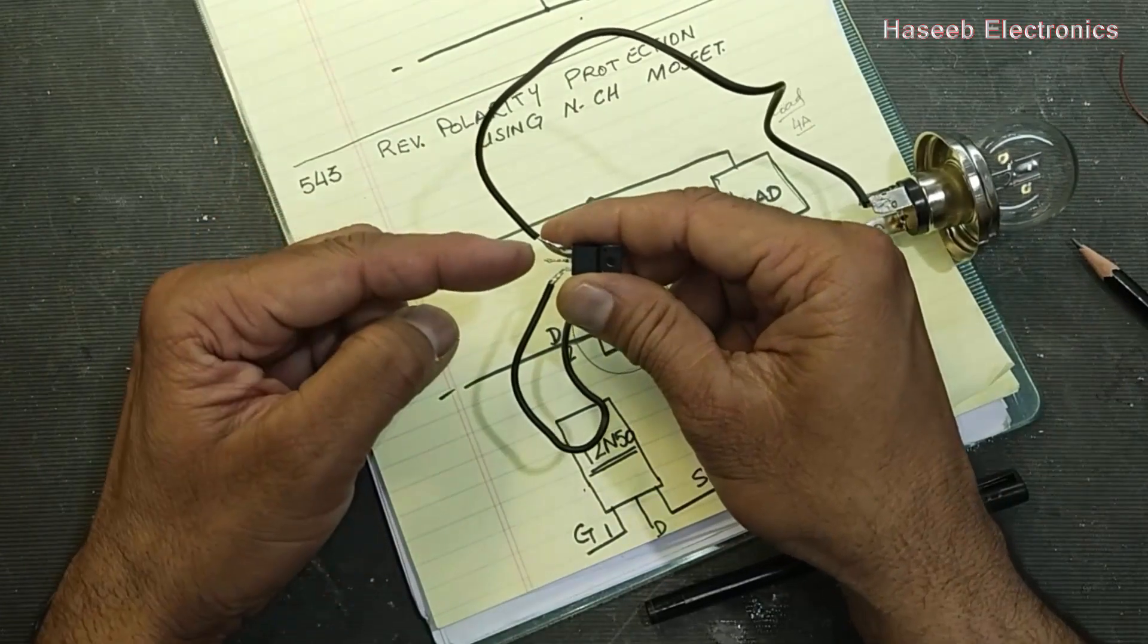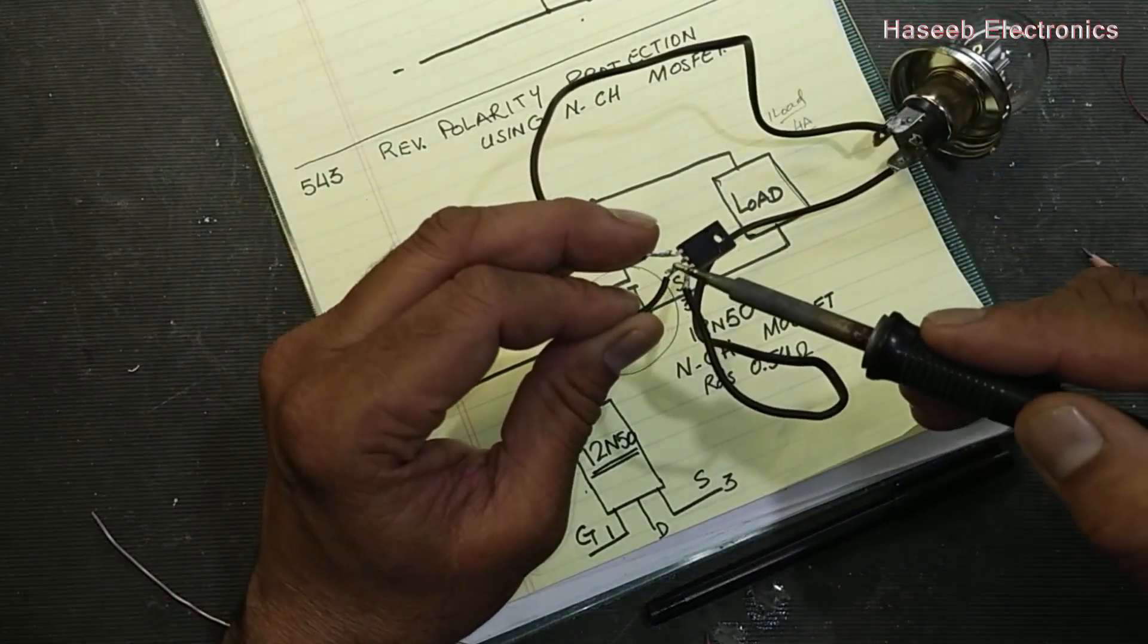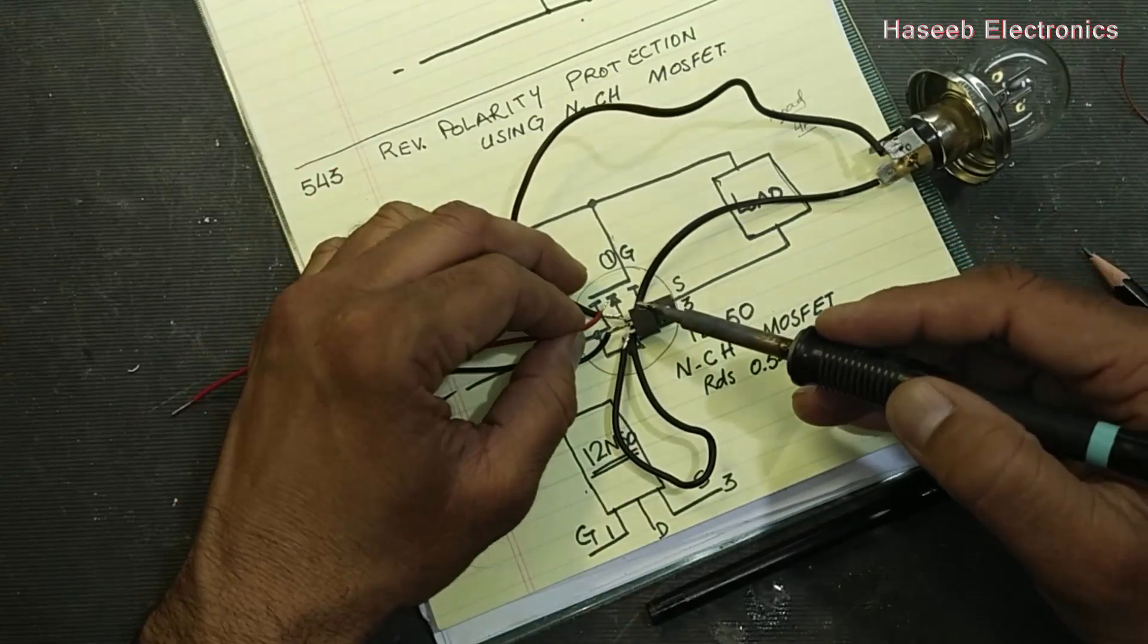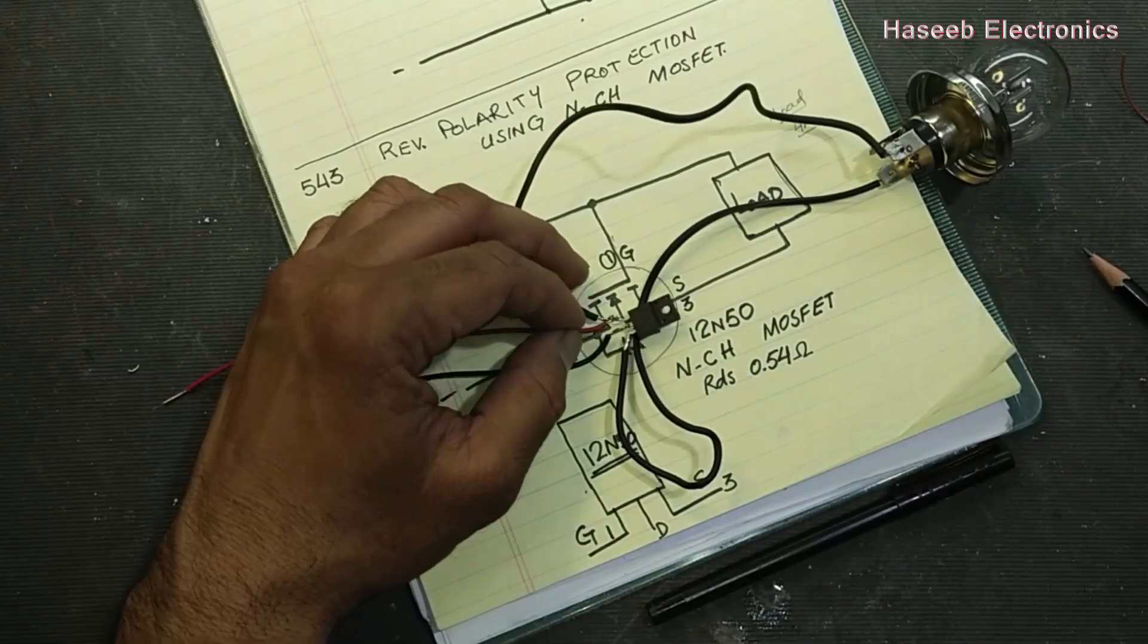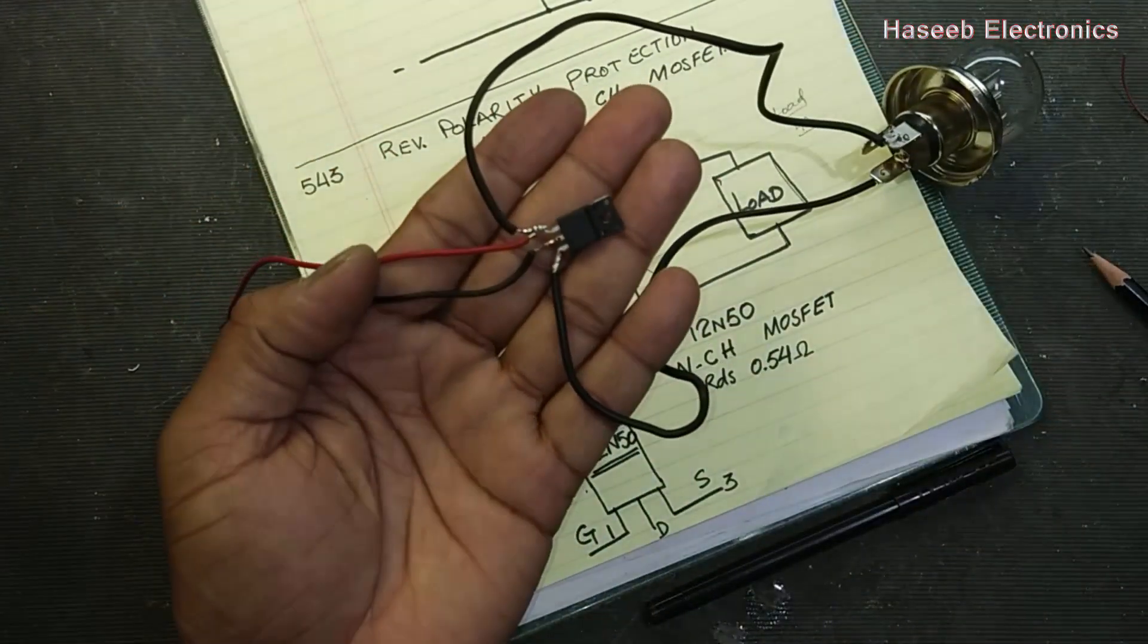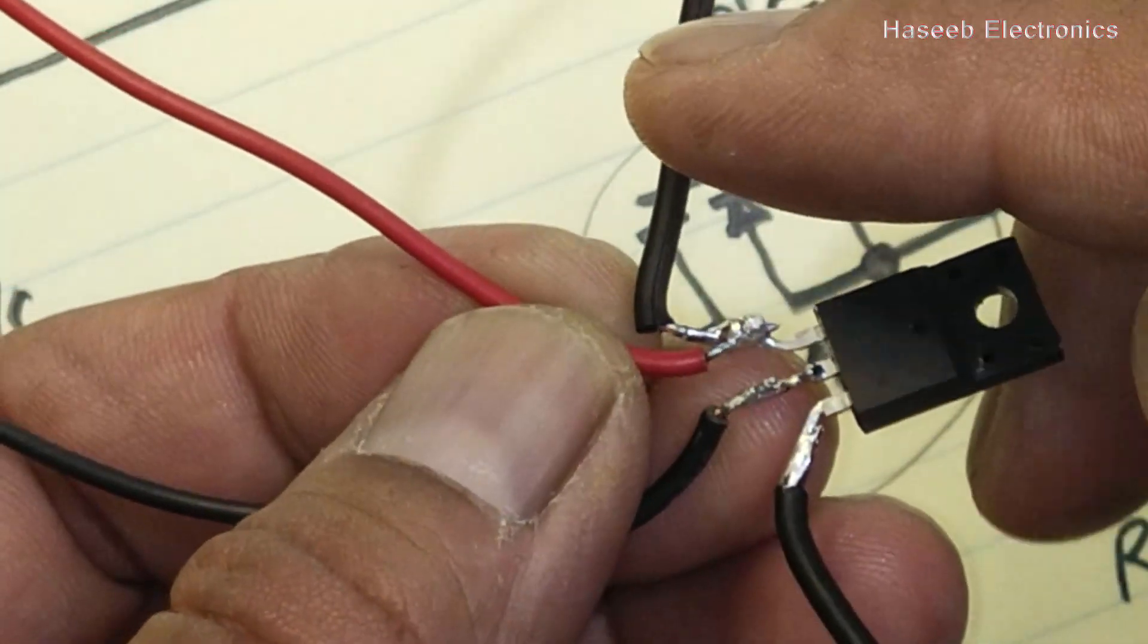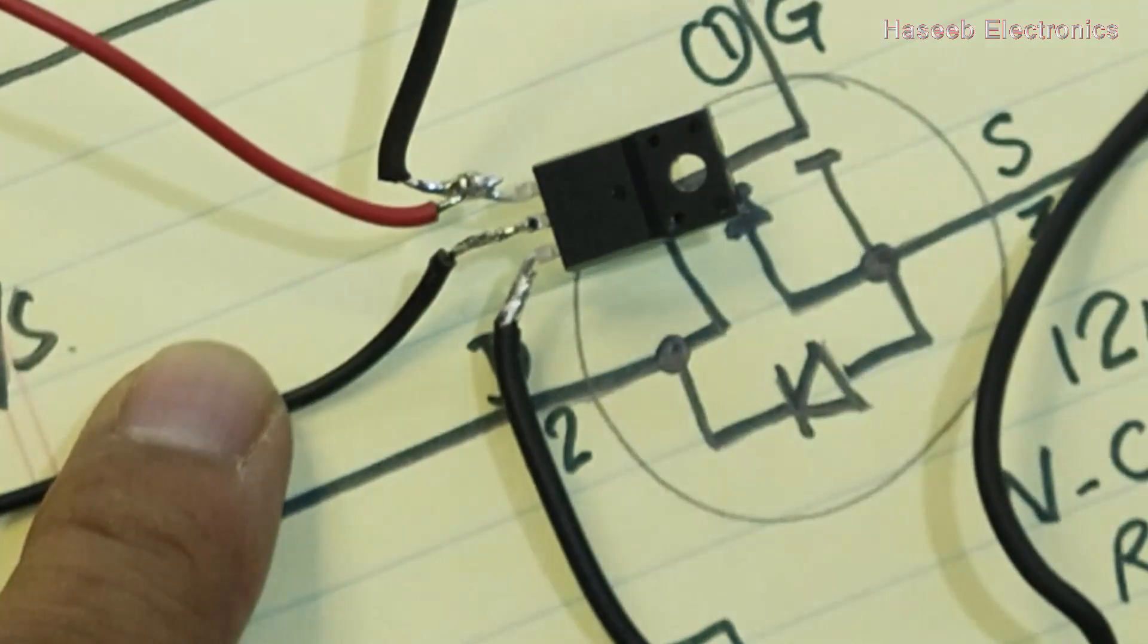We connected to source and one line to the gate, and now we will apply one line input supply line. Now these are the connections. These two wires are going to the load, gate is common between the load and the input supply, and this line is the drain line.